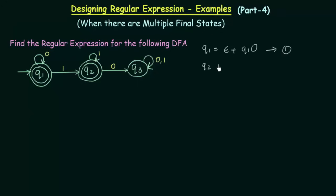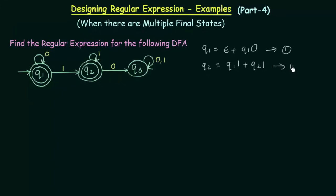Now let us do the same thing for q2. For q2, there is an incoming transition from q1 with input 1, so q1·1, plus there is an incoming transition from q2 itself with input 1, so q2·1. This will be equation number 2, the equation for q2.